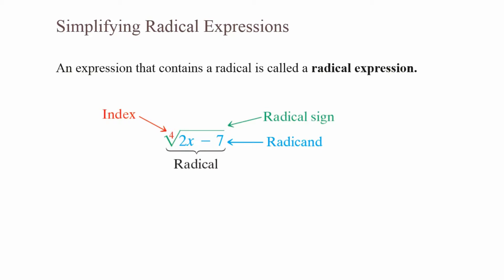Simplifying radical expressions. An expression that contains a radical is called a radical expression. The fourth root of 2x minus 7 is called our radical. The index is 4, and that tells you what root you're taking. If nothing's written, it's a square root. Your radical sign is the actual root symbol, and the radicand is what is under the root symbol. In this case, it's 2x minus 7.